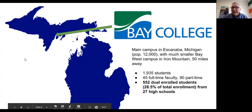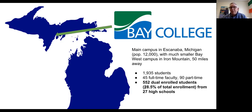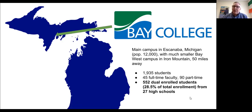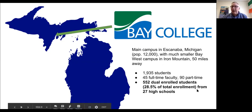I'm Todd from Bay College, way up in the Upper Peninsula of Michigan — the part that tends to be forgotten, kind of looks like it's attached to Wisconsin but is part of Michigan. We're based in a small town, Escanaba, 12,000 people. We have a smaller campus about 50 miles west. Our most recent stats from fall 2016 show 1,935 students. I've been here 25 years and the highest I can recall is about 2,500.